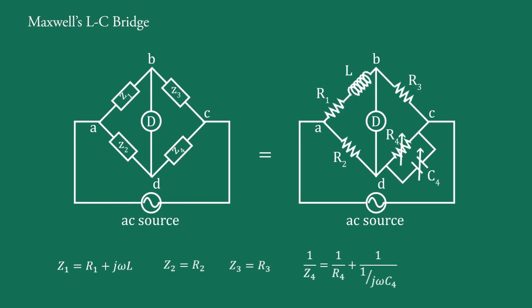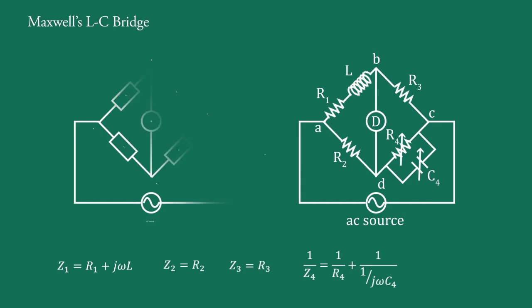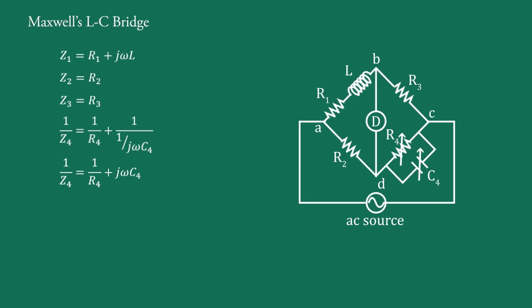It means 1 upon Z4 equals 1 upon R4 plus 1 upon (1/jωC4), which equals 1 upon R4 plus jωC4. After simplification we get 1 upon Z4 equals (1 plus jωC4·R4) upon R4.